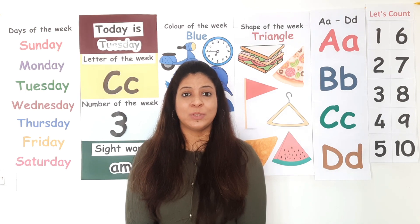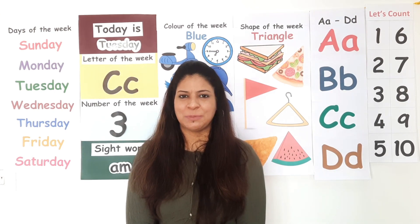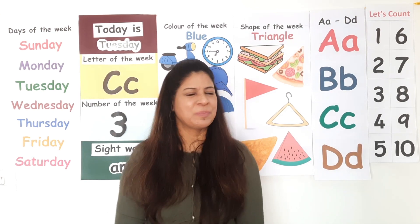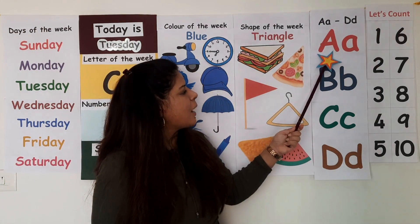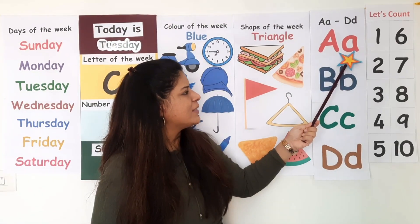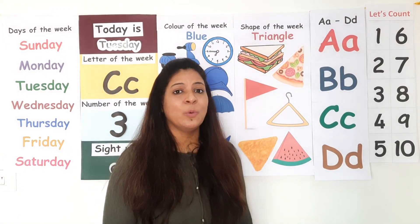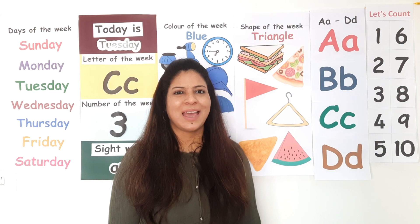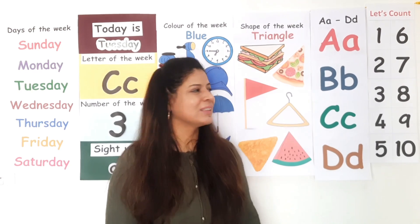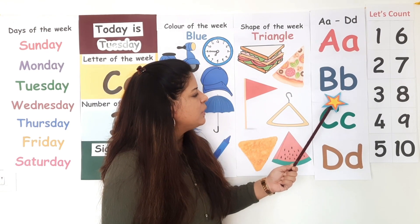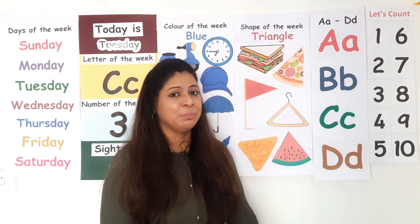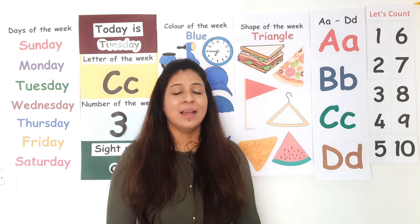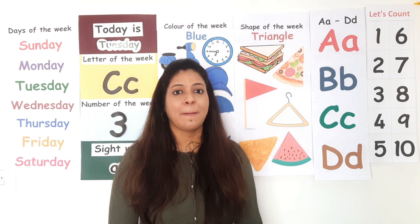Now it's time to learn the sound of letters A, B, C, D. Let's begin. This is uppercase letter A; this is lowercase letter A. Letter A makes the sound A. Repeat after me — letter A makes the sound A. This is uppercase letter B; this is lowercase letter B. Letter B makes the sound B. Repeat after me — B.